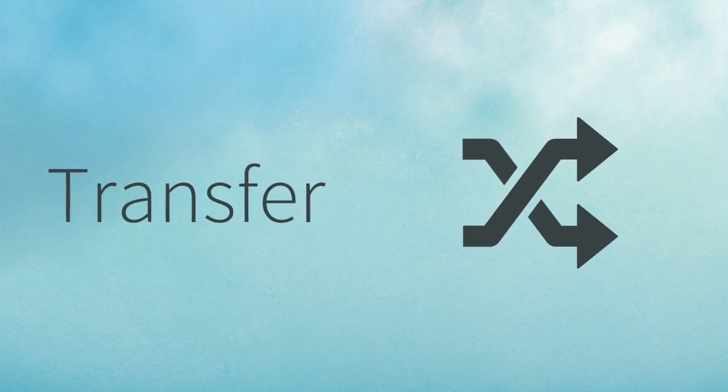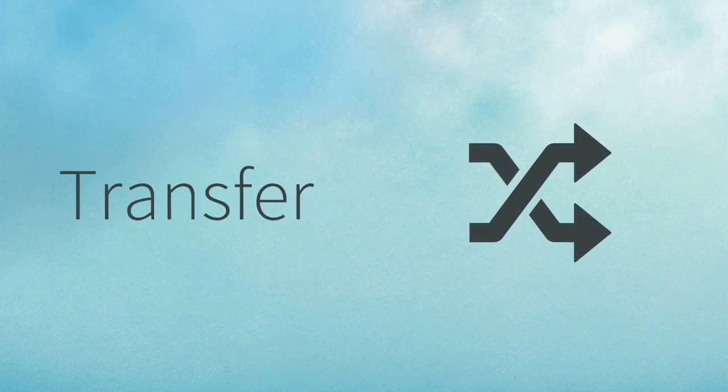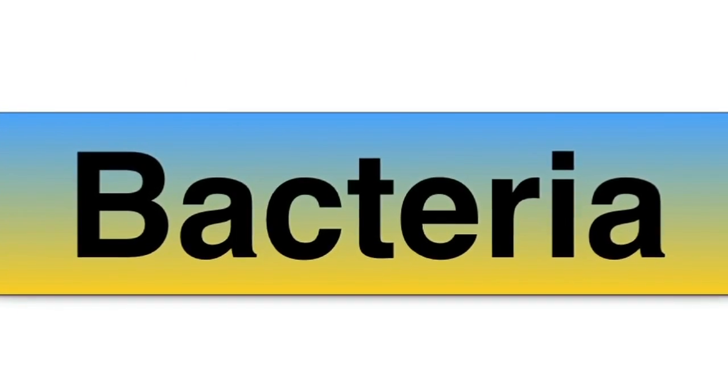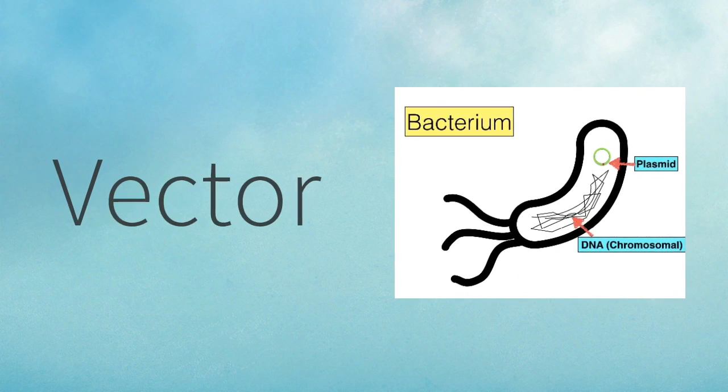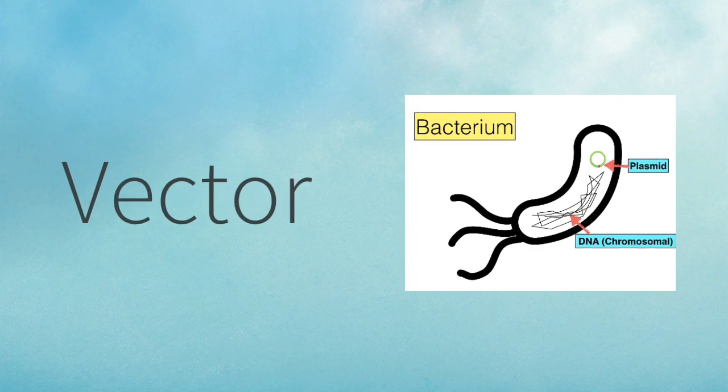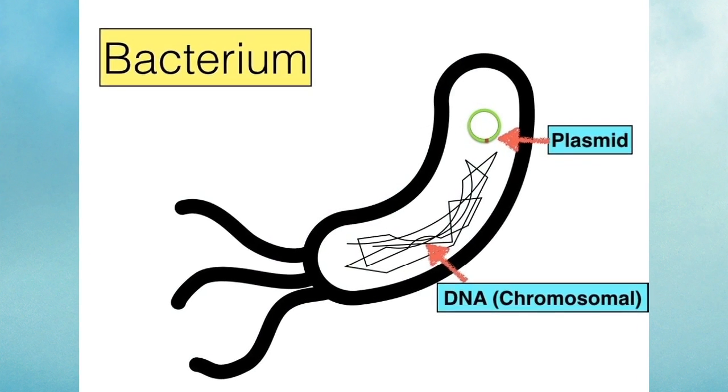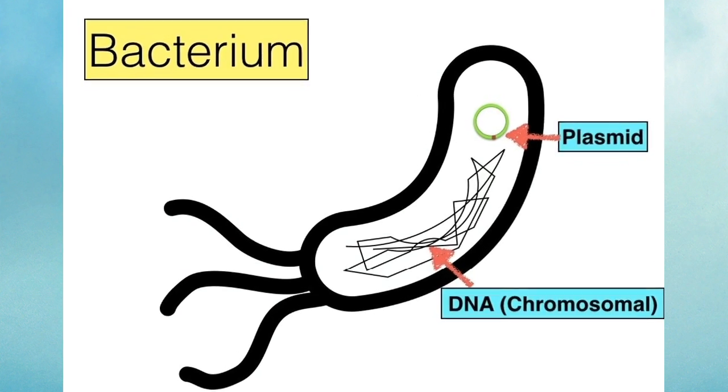So genetic engineering involves the transfer of DNA from one organism into another. We'll discuss bacteria because they're easy to understand. To transfer DNA into a bacterium, you need a vector, something that's going to carry the foreign DNA into the bacterium. The most commonly used vector in genetic engineering is the bacterial plasmid.